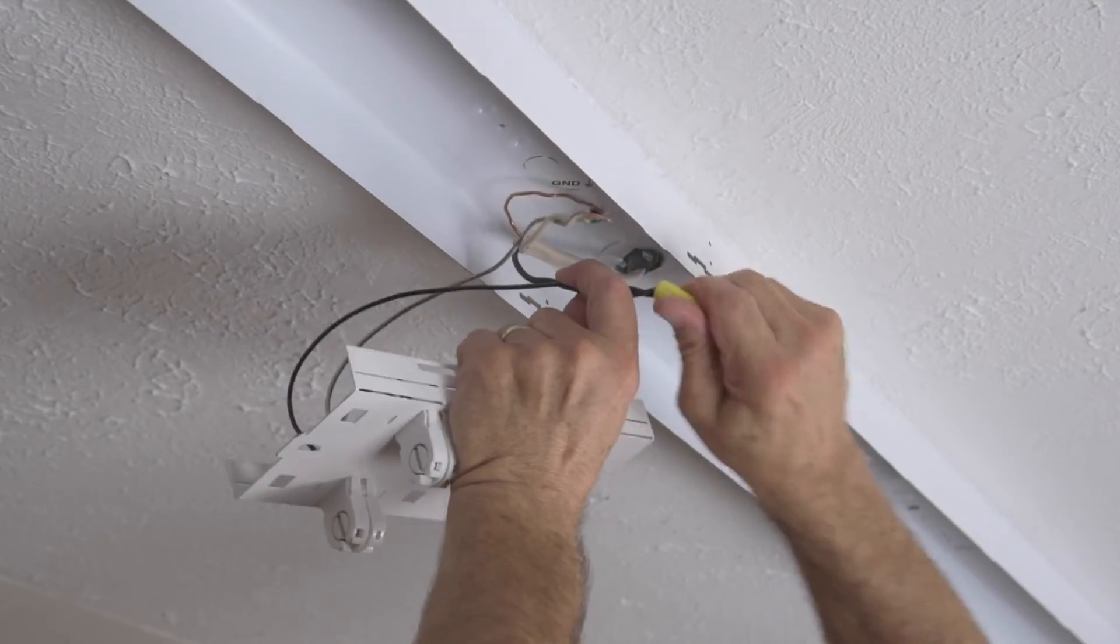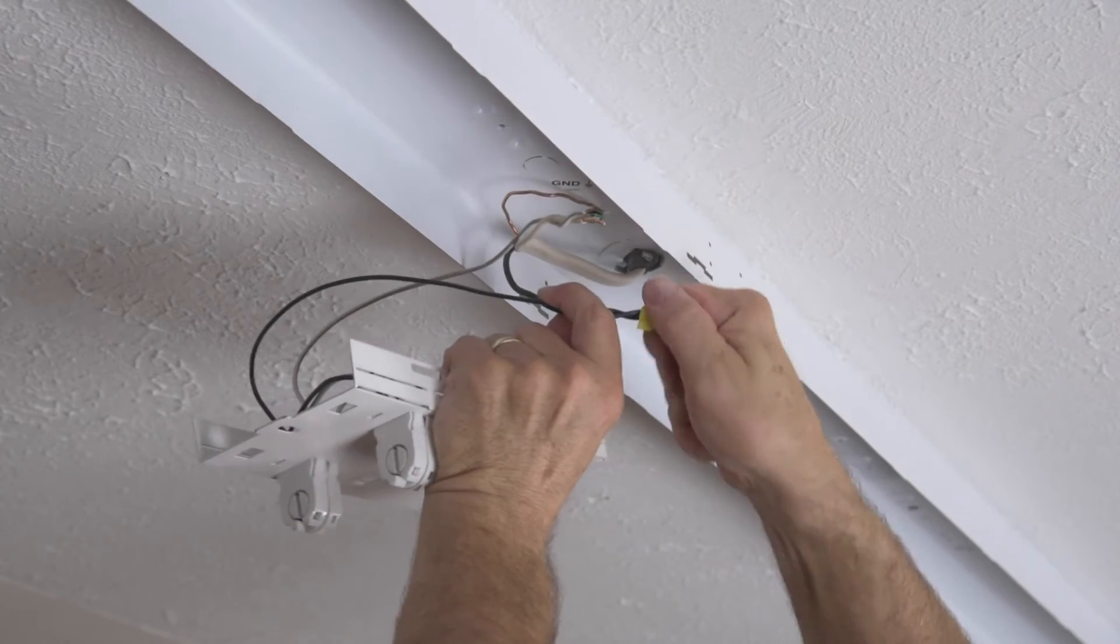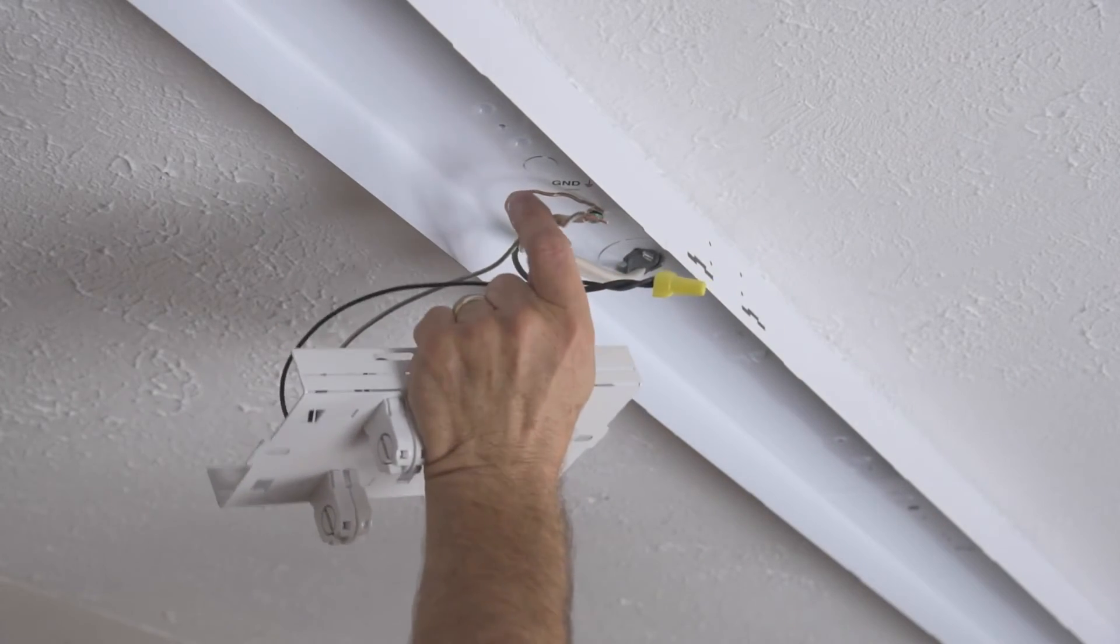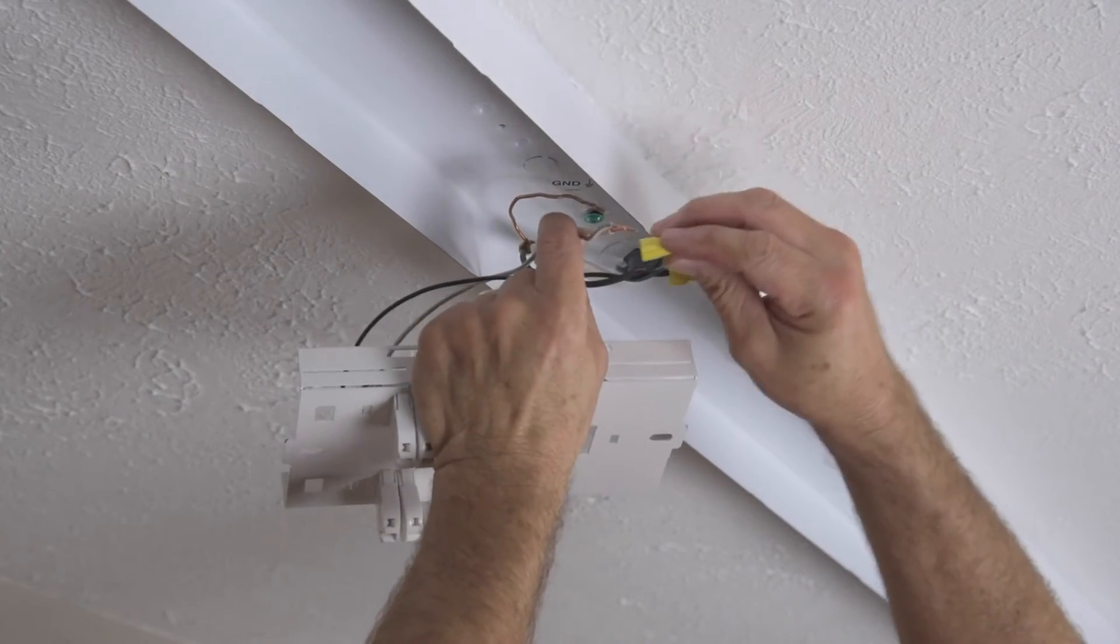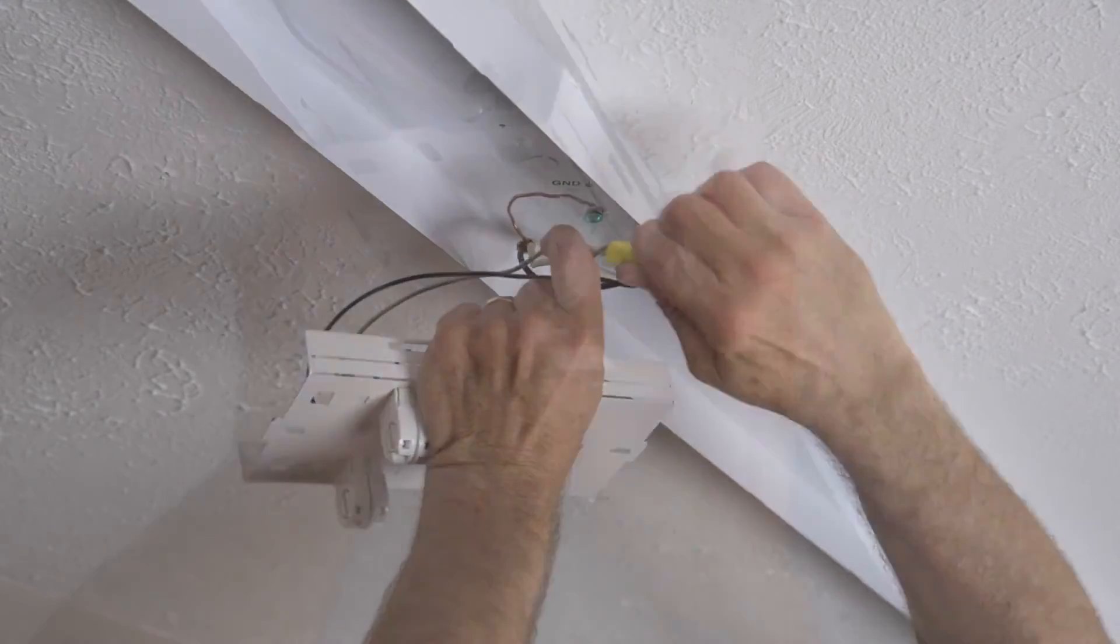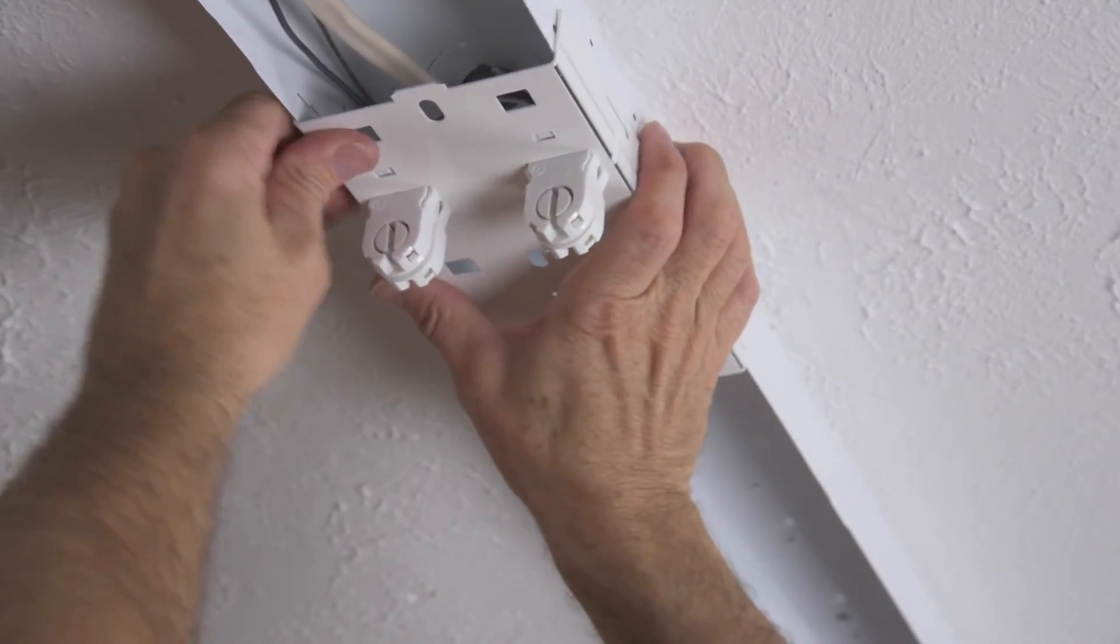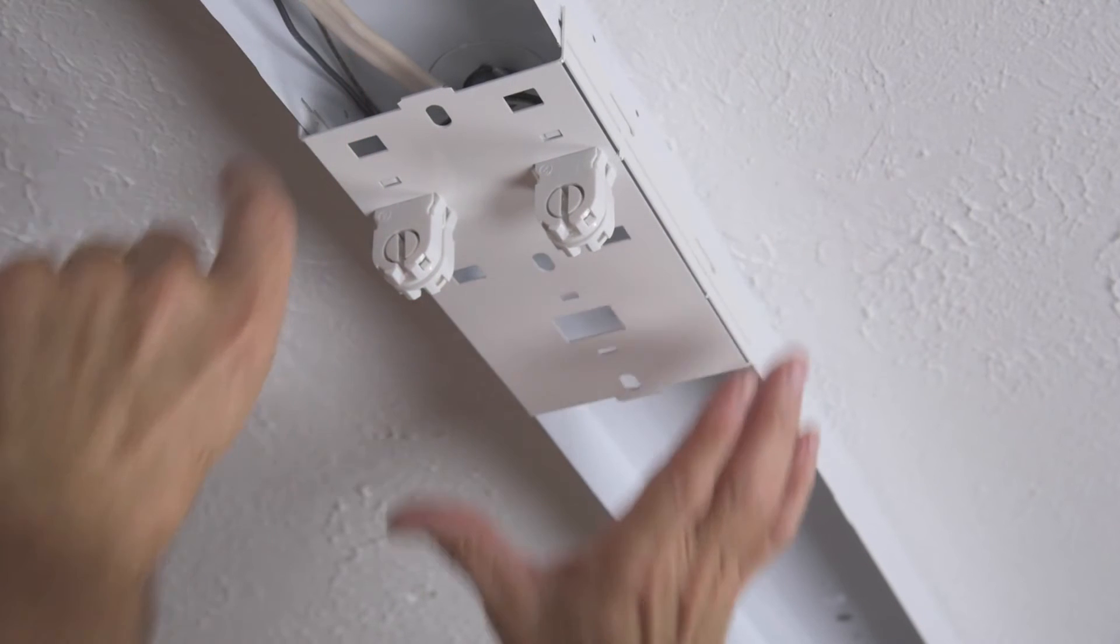Now connect the lead wires to the wires from the outlet box using wire nuts. Black to black, white to white. Then tuck the wires up into the fixture. Pressure fit the center mount to the fixture.